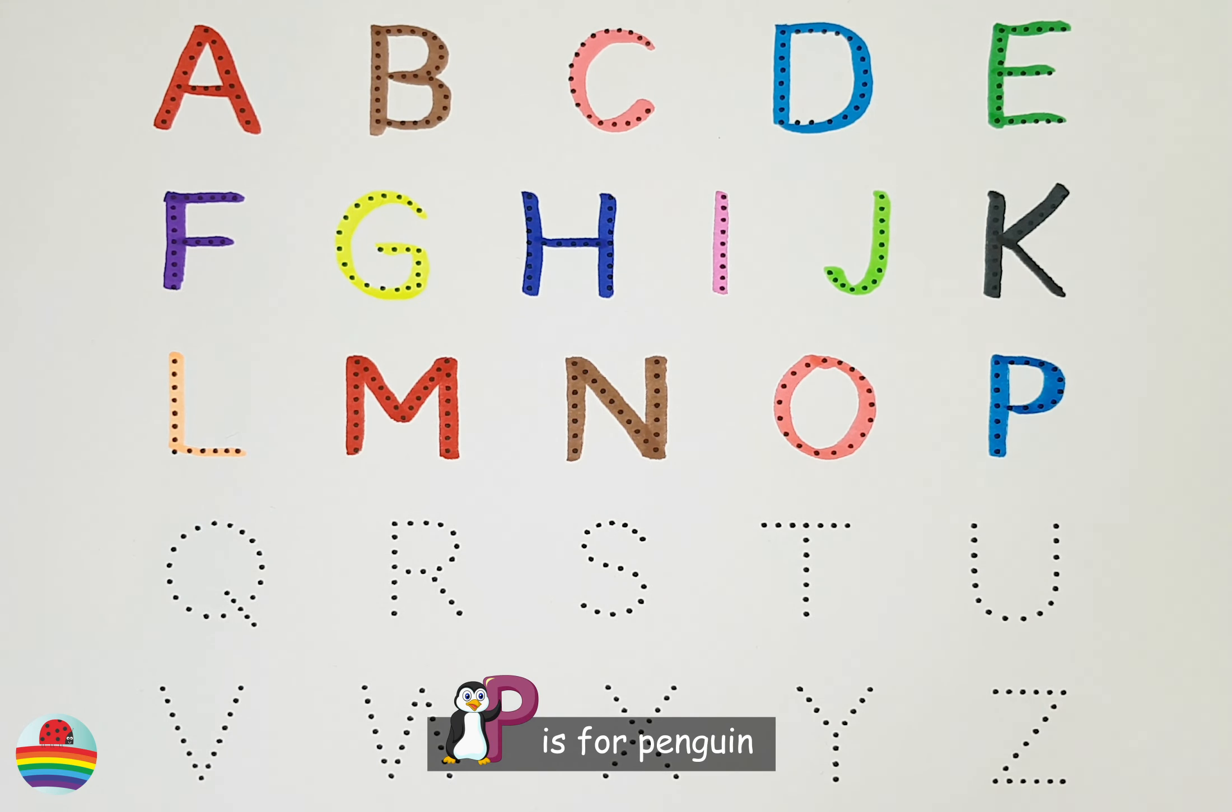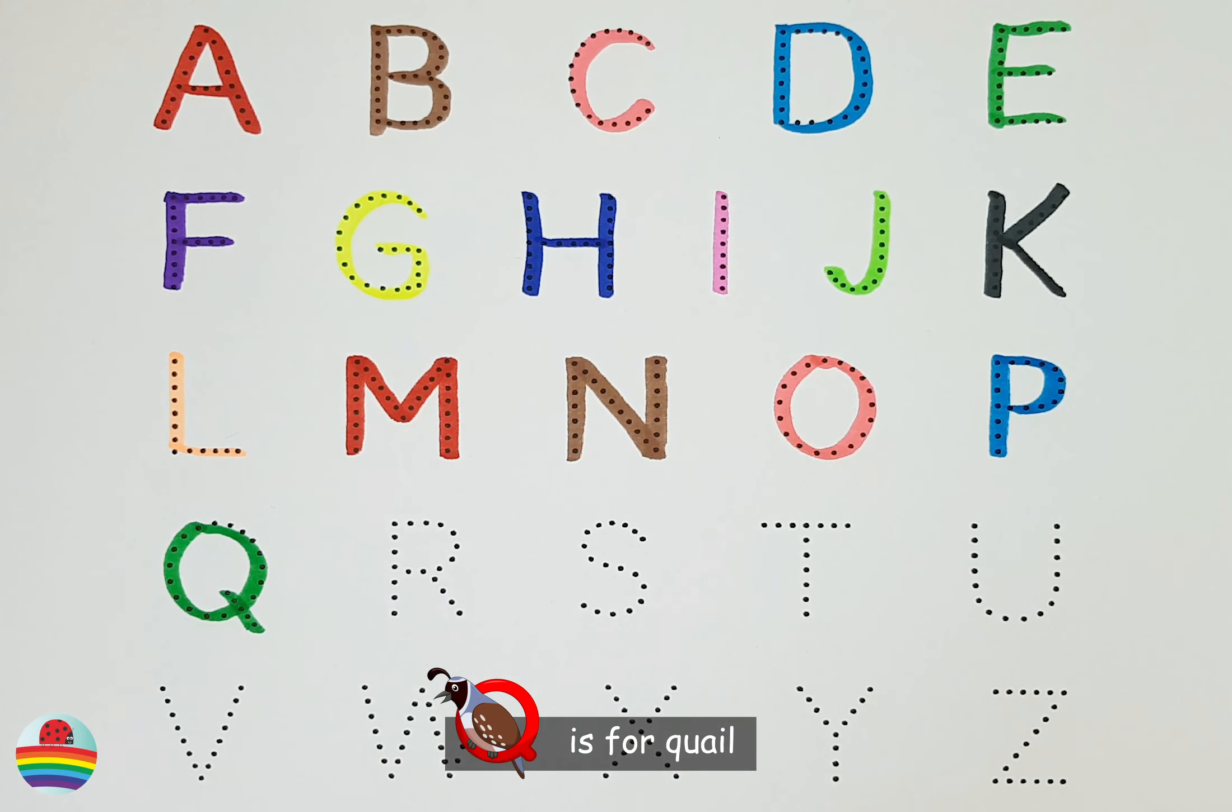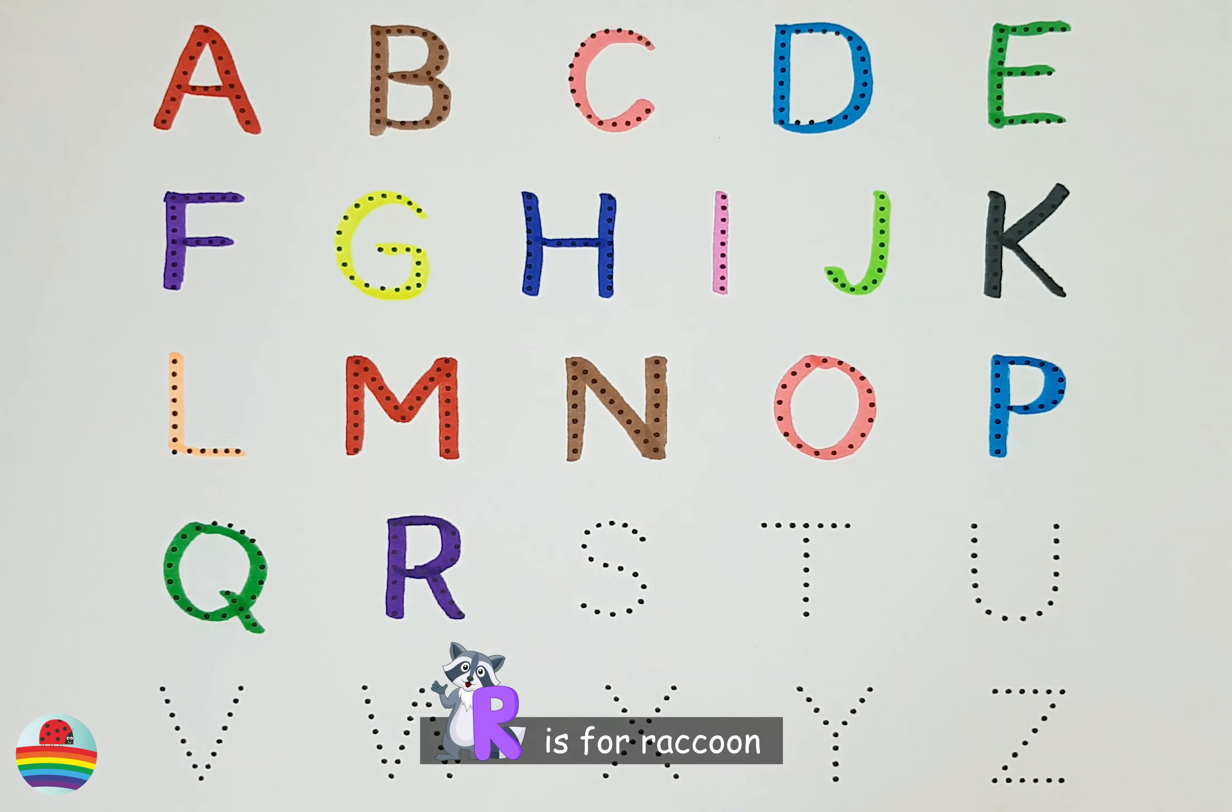P. P is for Penguin. Q. Q is for Quail. R. R is for Raccoon.